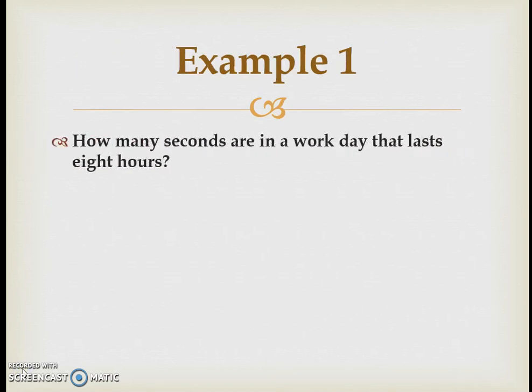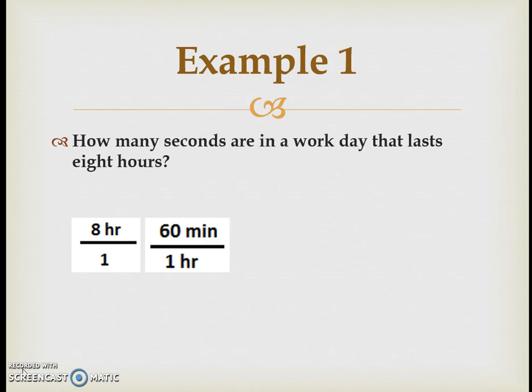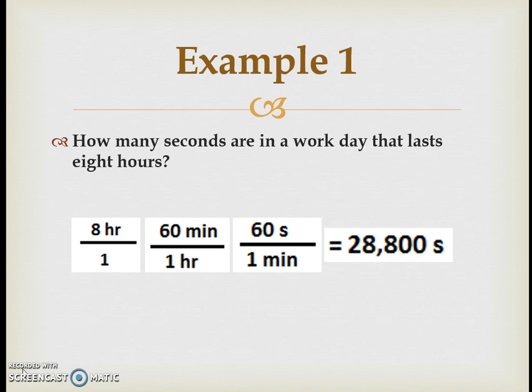Dimensional analysis can be a simple one-step conversion or involve three or four different steps, changing from one unit to another repeatedly. Starting with an example: converting an eight-hour workday into seconds. Take the 8 hours over one, multiply by one hour over 60 minutes so that hours cancel, then multiply by one minute over 60 seconds so minutes cancel, leaving the unit of seconds. The result is 28,800 seconds in an eight-hour workday.